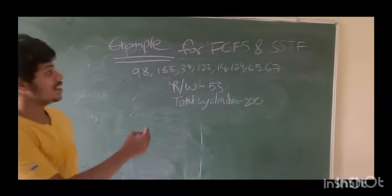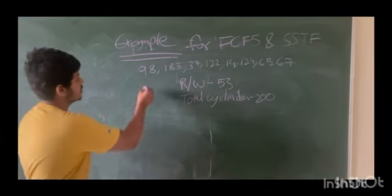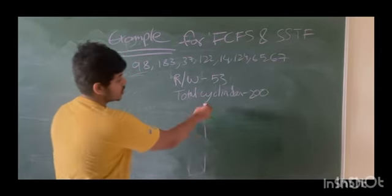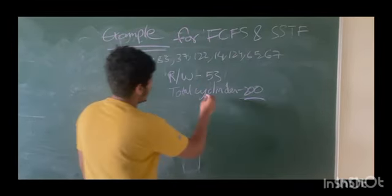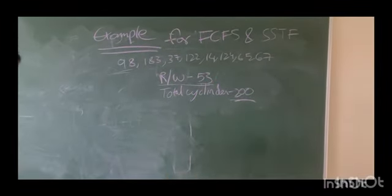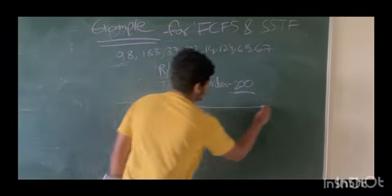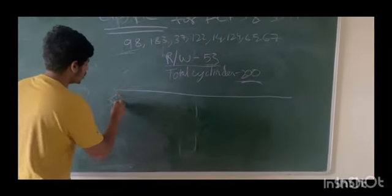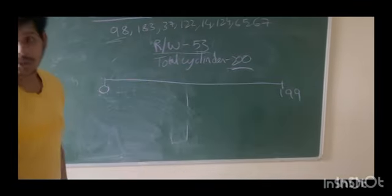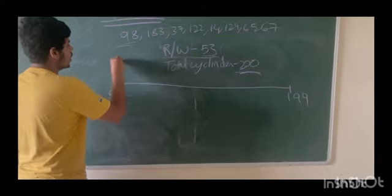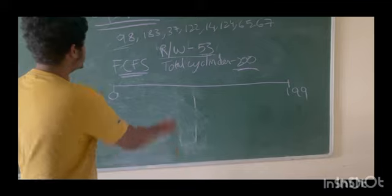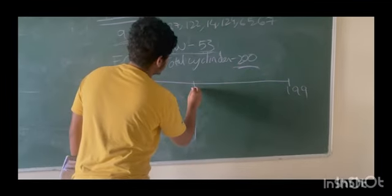So this is the example and these are the cylinders. The total cylinders we have is 200. The reader-writer is at position 53. First, we discuss the example of FCFS, First Come First Serve. So we have the track sequence.